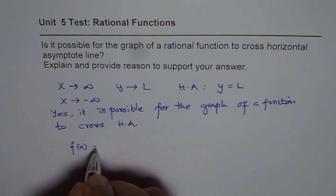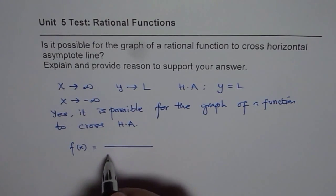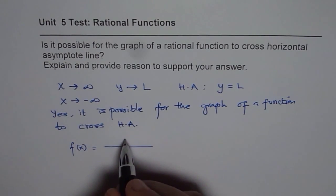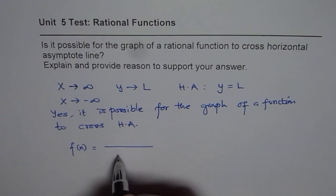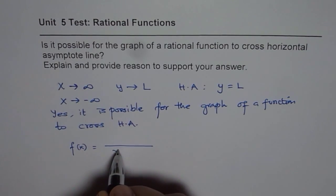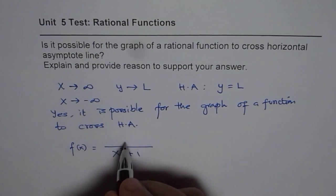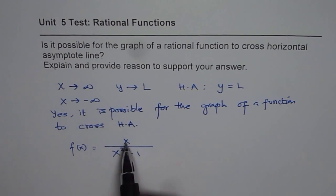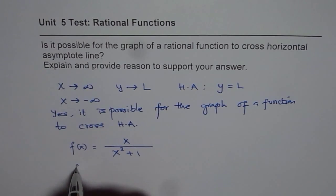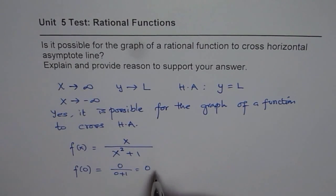Consider the function f of x equals to, if I have a numerator degree less than denominator, in that case we have x-axis as horizontal asymptote, right? So let's take example as x squared plus 1, for example, and numerator as x. So if I have numerator as x, then what is the value of f of 0? f of 0 will be 0 over 0 plus 1, which is 0.